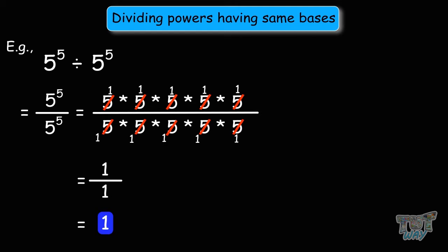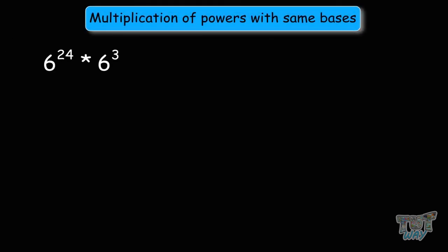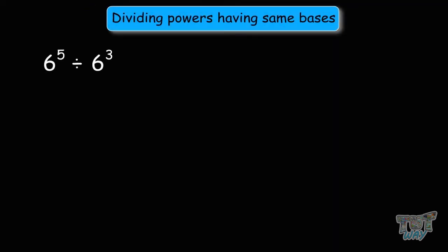So now we know how to multiply and divide powers with the same bases. To recap the rules: when the bases are the same and you have to multiply the powers, you add the exponents. And when you need to divide powers with the same bases, you subtract the exponents.